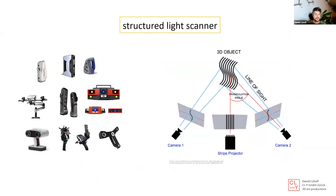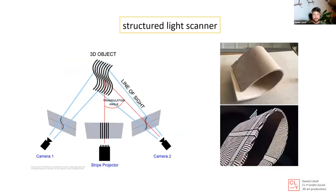Structured light scanning works like this: most of the time you have two cameras that look at the object, and a projector sends out a structured stripe pattern onto the object. On the right side we have a loop, and we produce with the scanner the pattern that is written by the scanner.